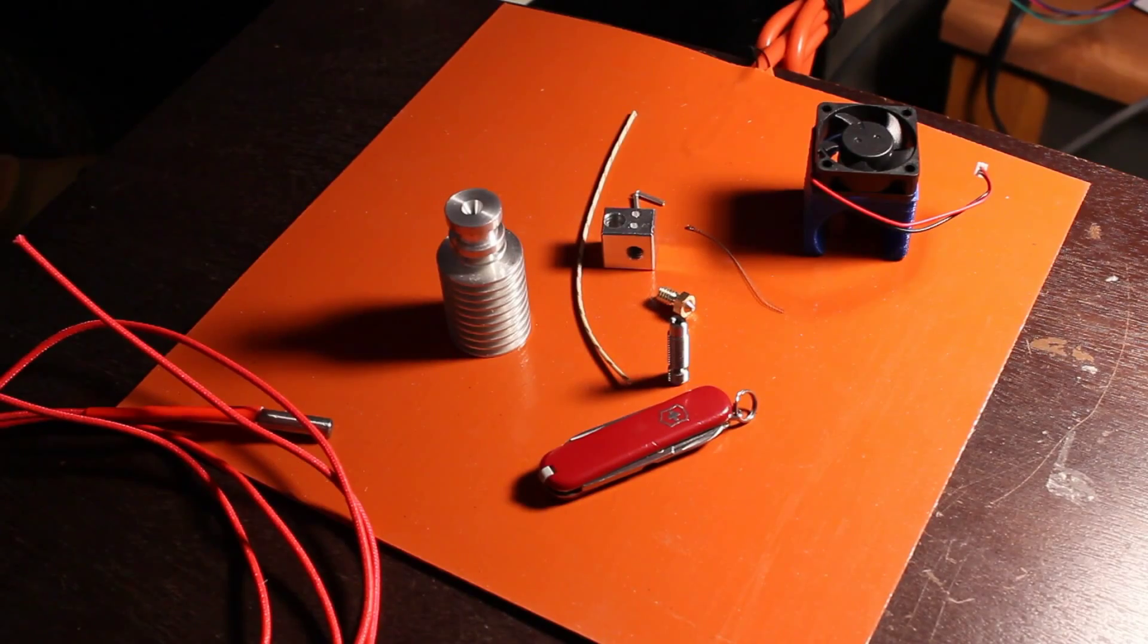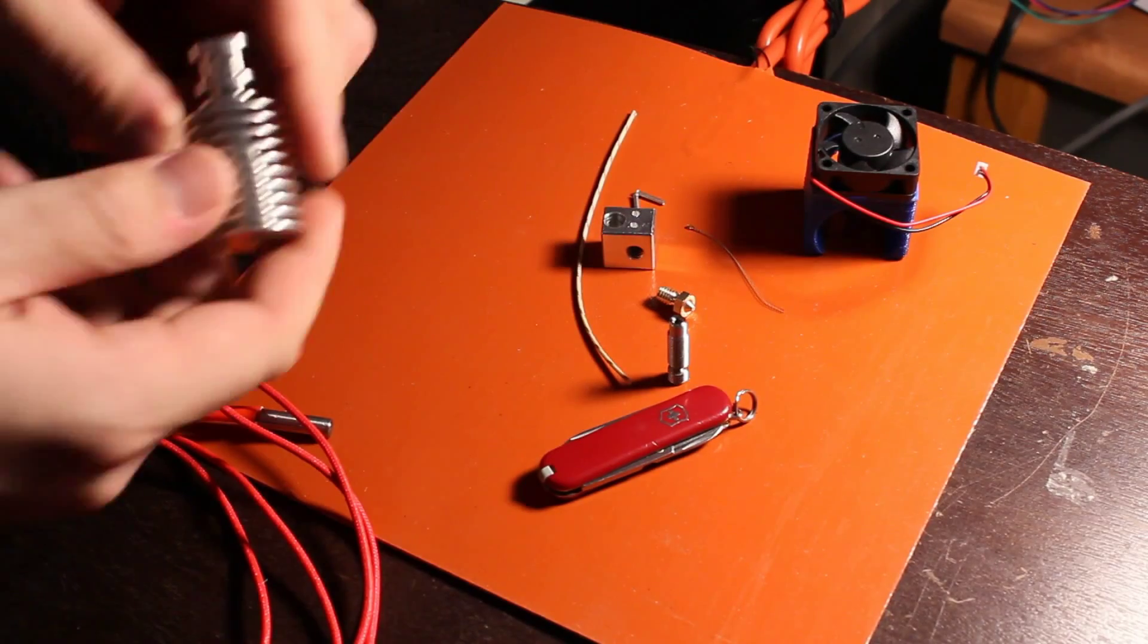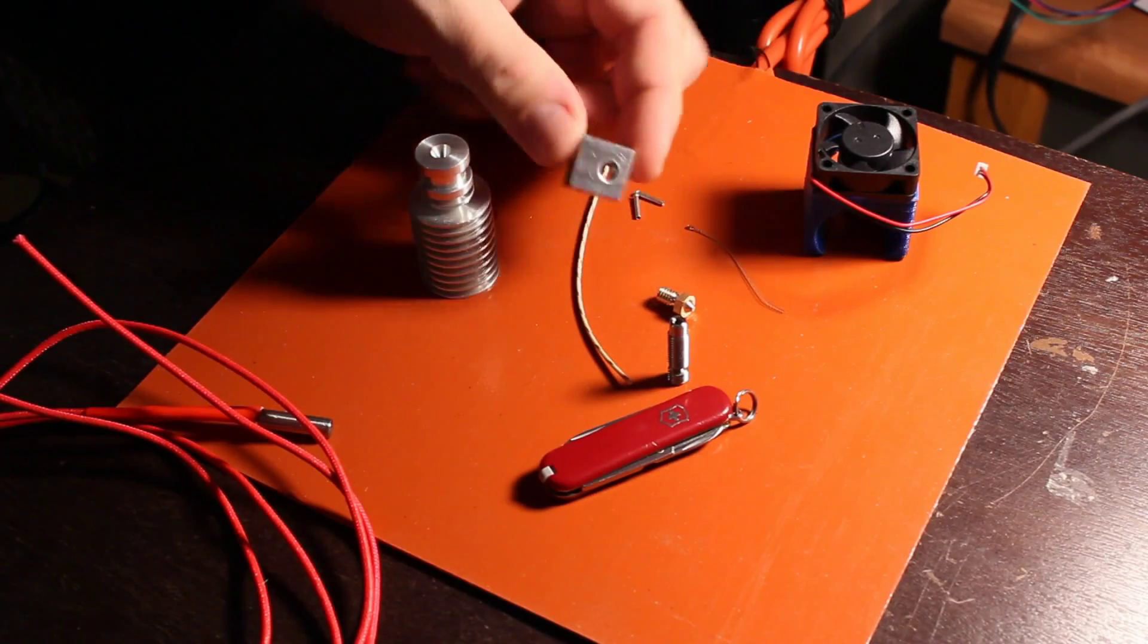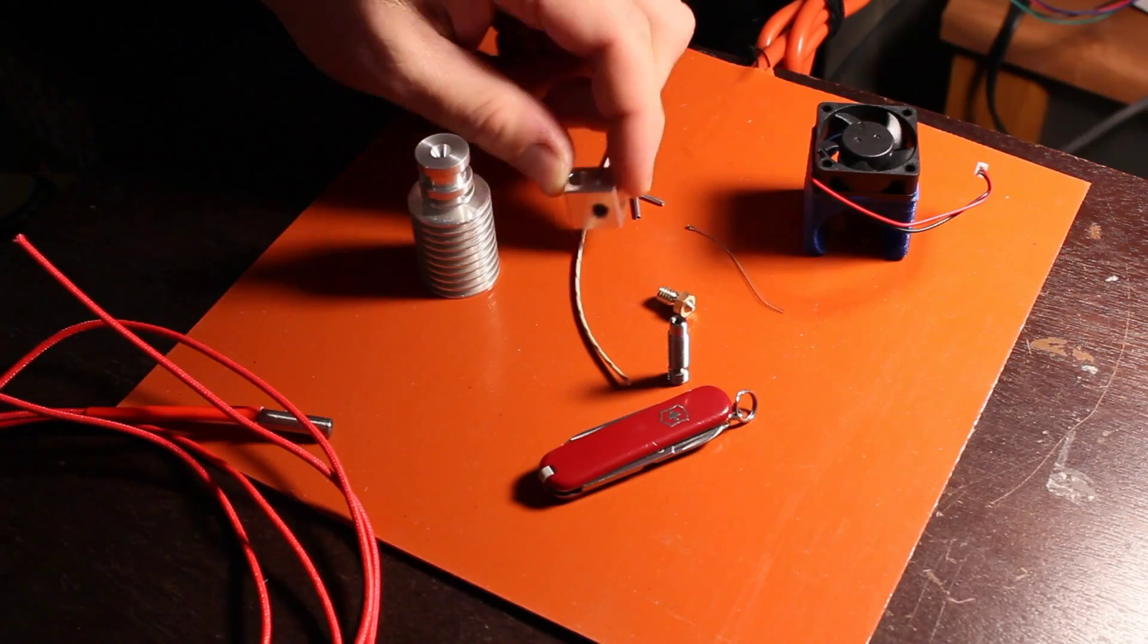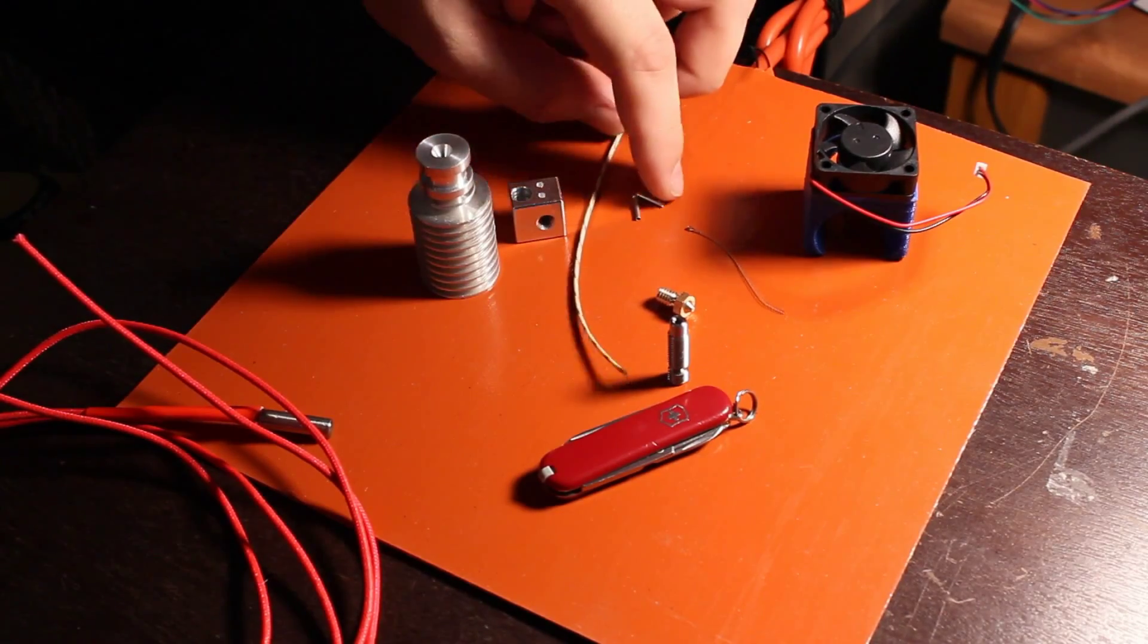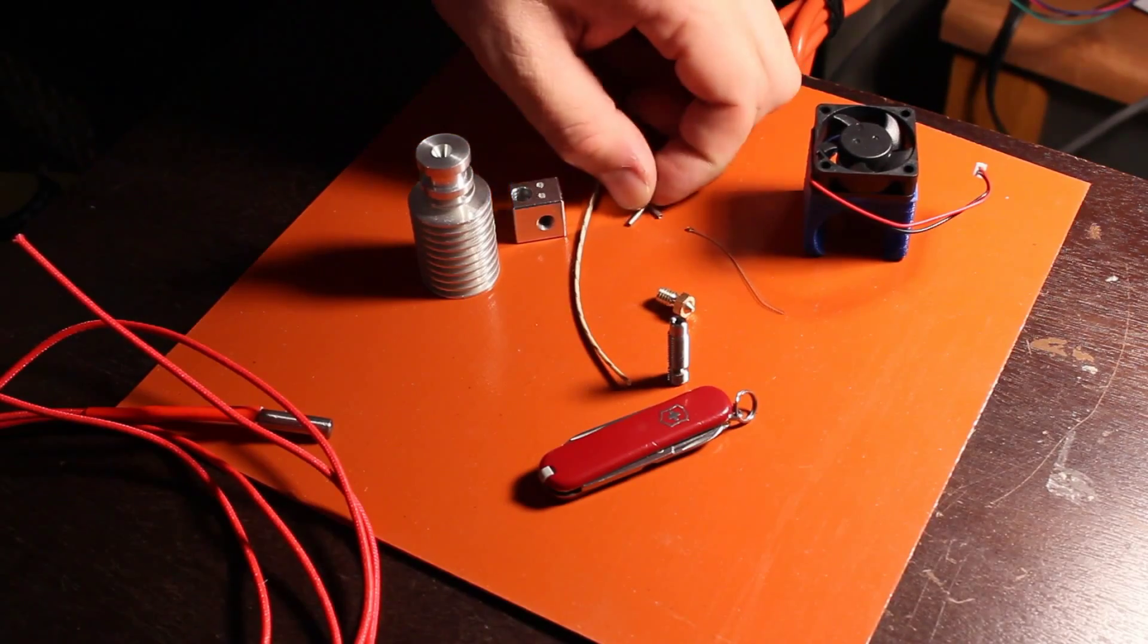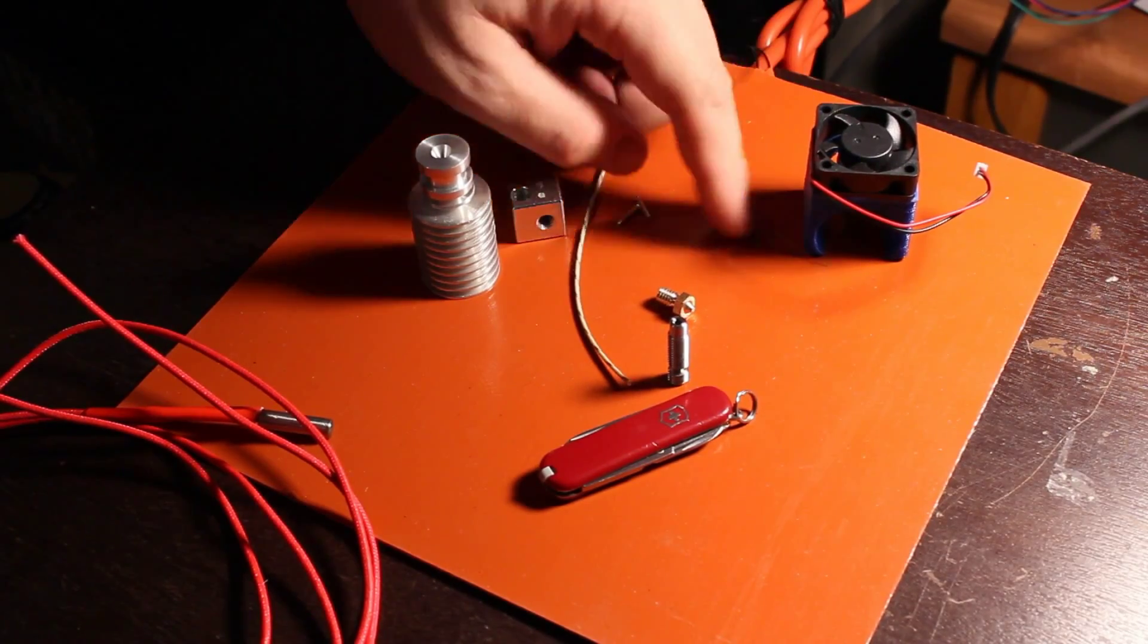I didn't do an unboxing on this one because I just honestly didn't feel like it. But here's essentially what it came with. The main heat sink piece. This is a heater block, aluminum. A couple of, they call them boot lace ferrules, little crimp terms. Get to that in a minute.